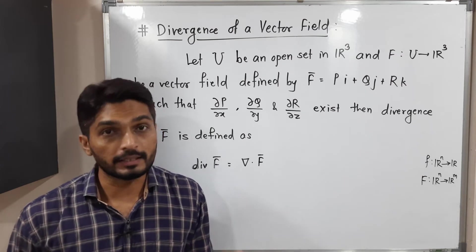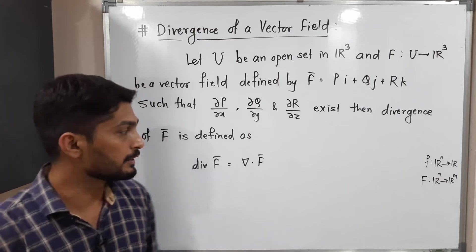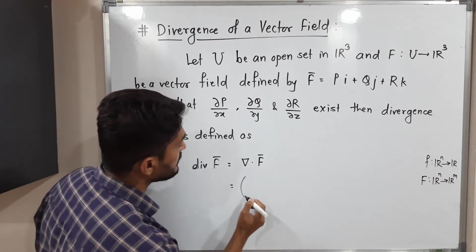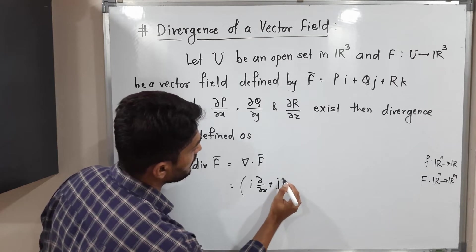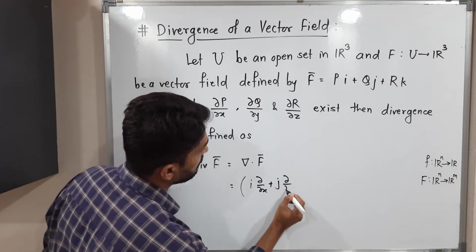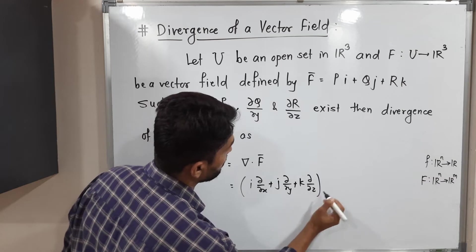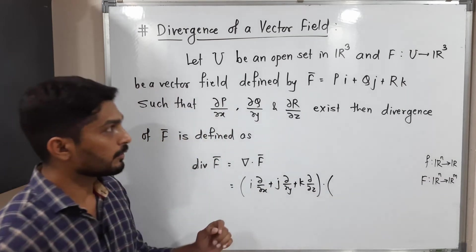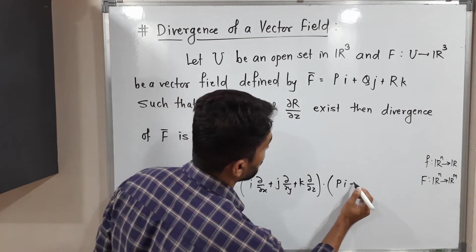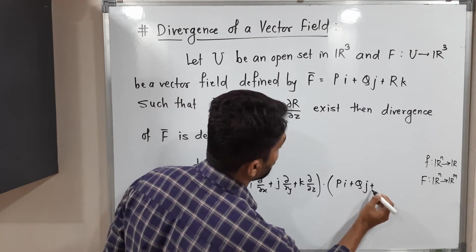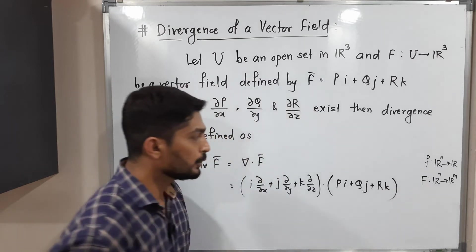Now, what is ∇ (del)? We have already studied this in previous videos. Del is defined as i(∂/∂x) + j(∂/∂y) + k(∂/∂z), and we take the dot product of this with F̄.